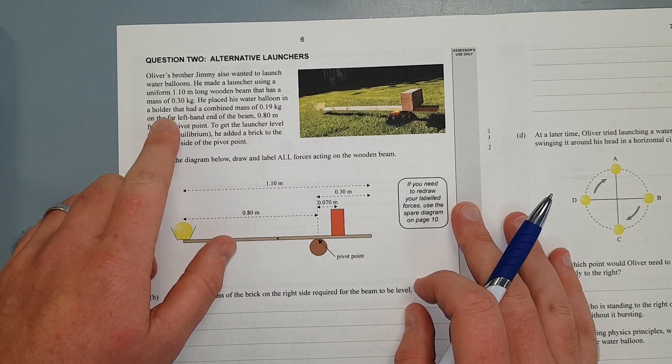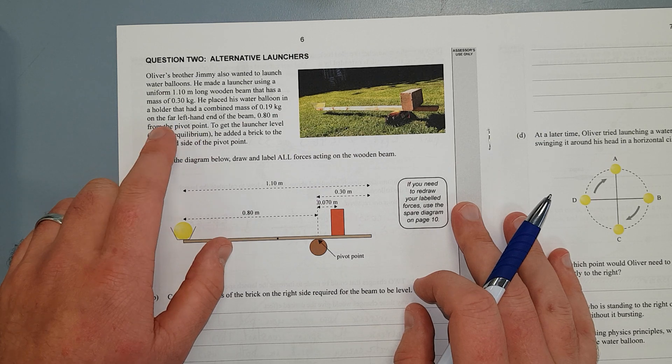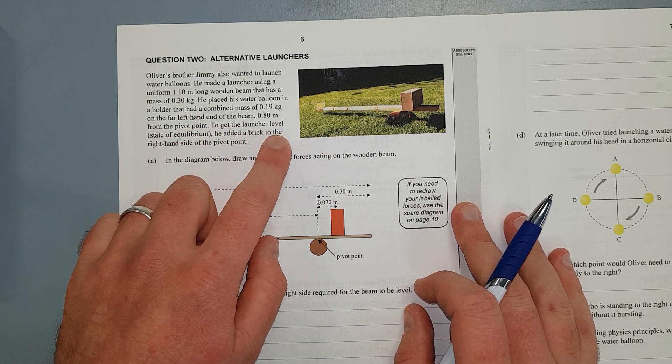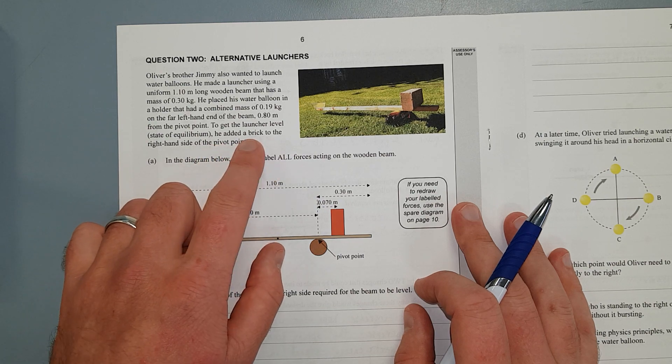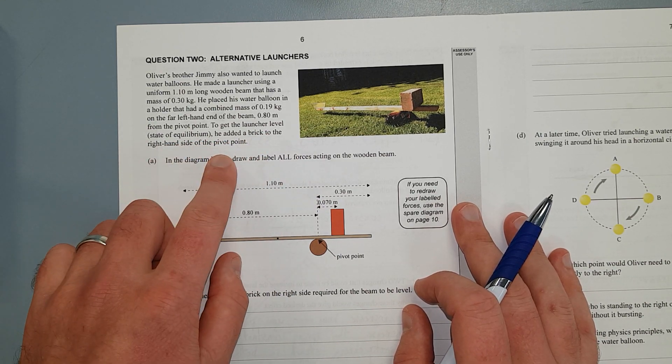He placed the water balloon in the holder at the end that has a combined mass of 0.19 kg. On the far left hand of the beam, 0.8 meters from the pivot point, to get the launcher in a level state of equilibrium—that's a key word—he added a brick to the right hand side of the pivot.